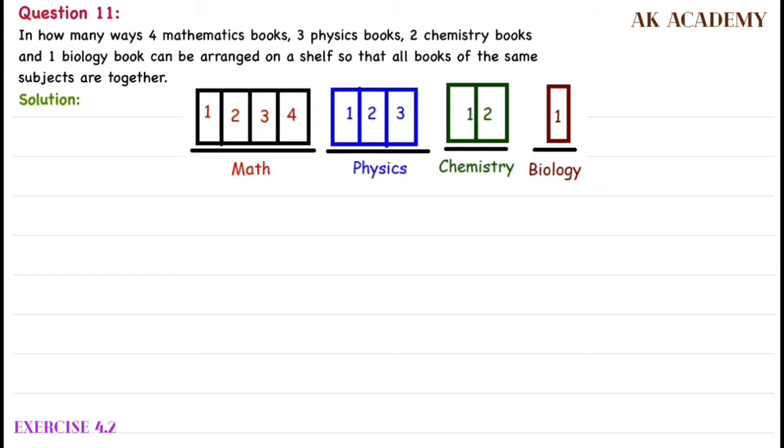4 subjects can be arranged in 4 ways, which is equal to 4P4, that is 4 factorial.